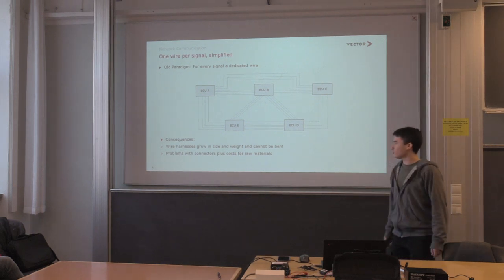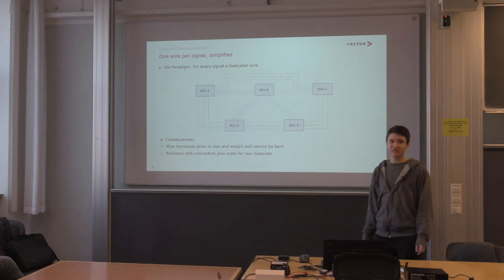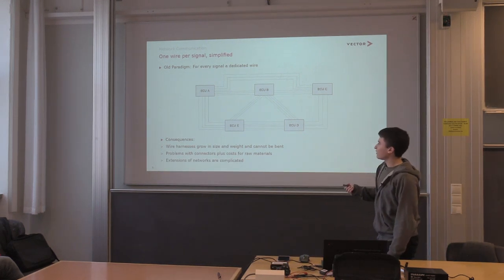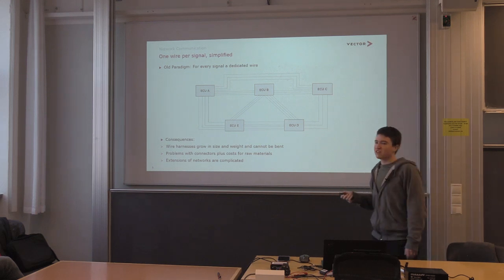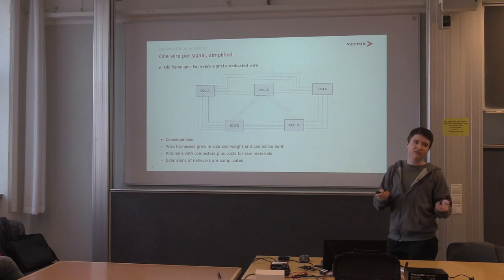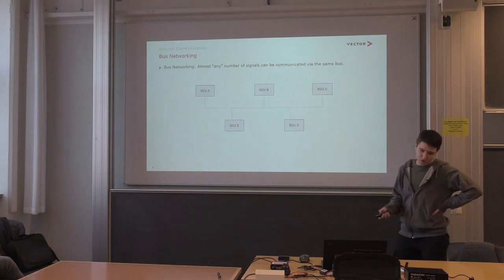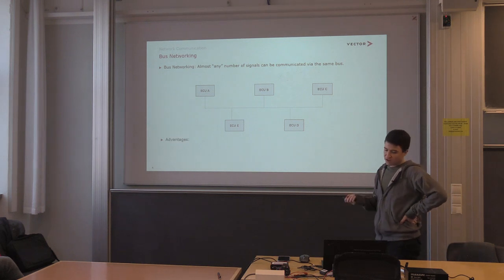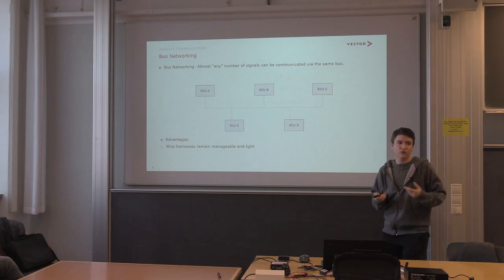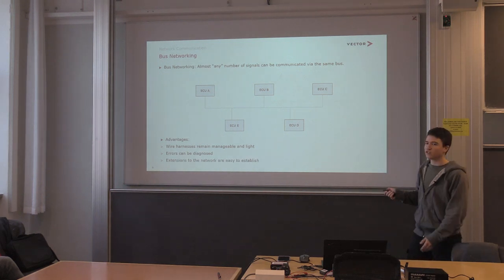This also results in high costs for raw materials — a wire that's roughly five meters point-to-point ends up being ten meters or more once bent around sharp corners. Extensions were also very complicated: adding one more electronic control unit that communicates five signals to ten other devices means far more than five wires. So something needed to change, and bus networking was introduced — all electronic control units communicate on the same wire — giving us smaller wire harnesses, fewer cables, lighter weight, easier error detection, and simple extensions.